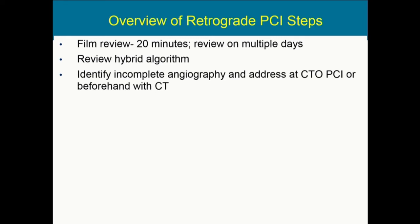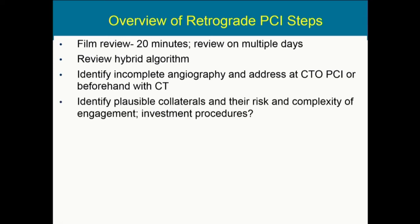Identifying incomplete angiography is really, really important. As you saw earlier, an incomplete angiogram can really confuse us in terms of what we need to do. We need to address that at the point of care when we do our CTO PCI by dual angiography, or another option is to use CT ahead of time, especially if the target vessel is thought to be incompletely visualized or very small. The next step is to identify plausible collaterals and stratify their risk and complexity in terms of engaging and wiring them, and whether investment procedures are needed.